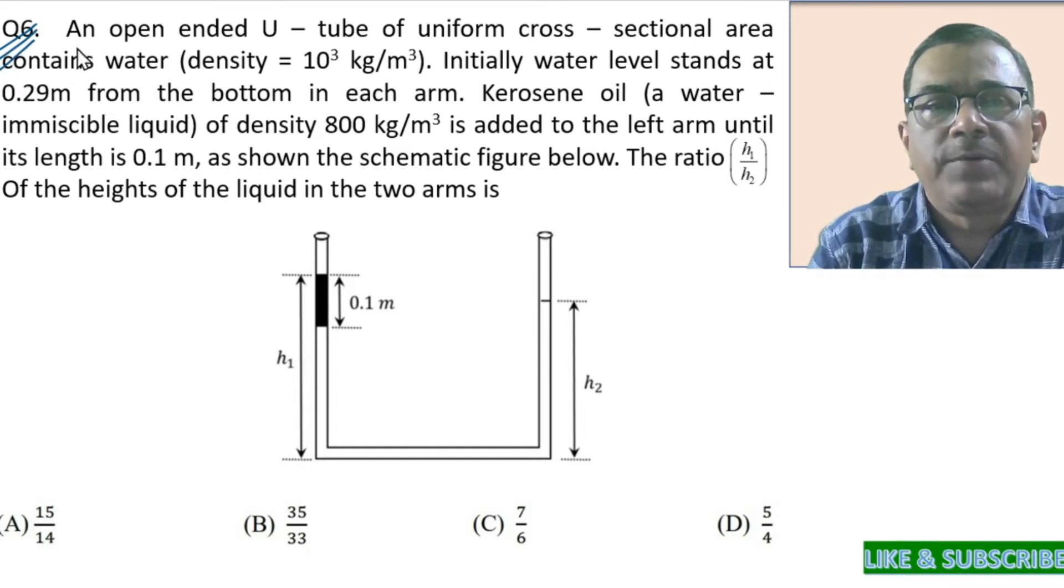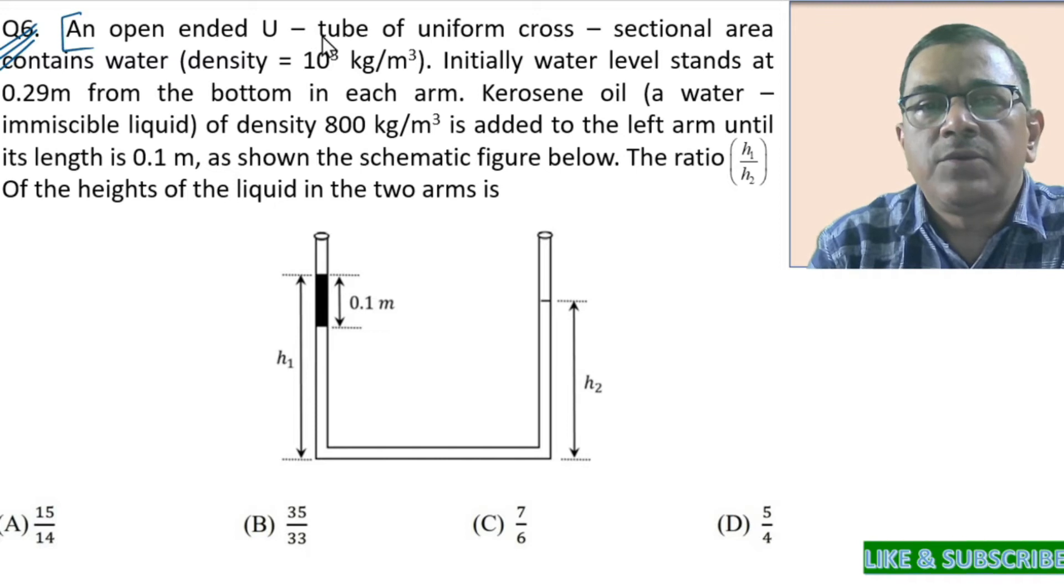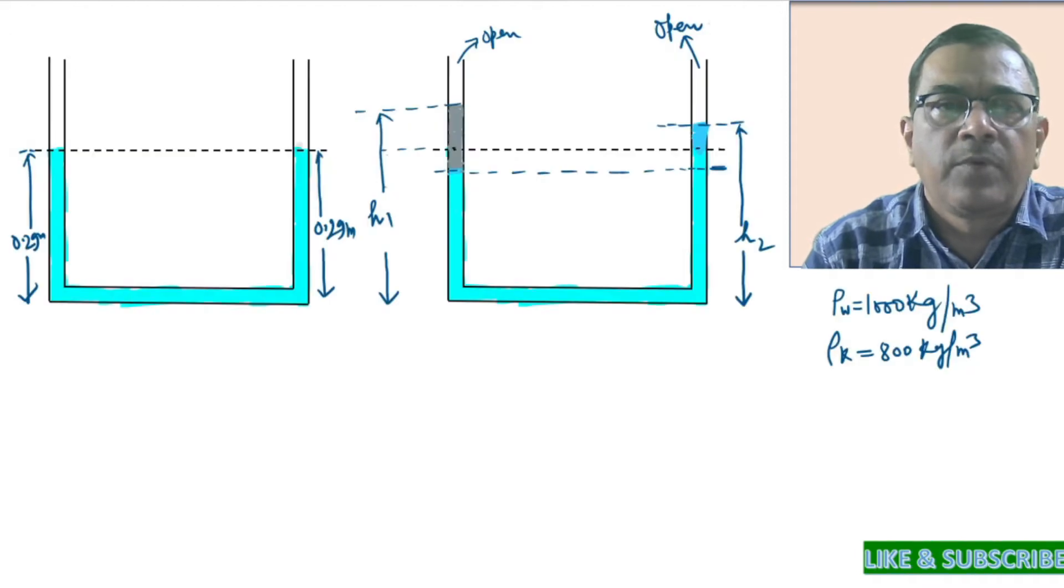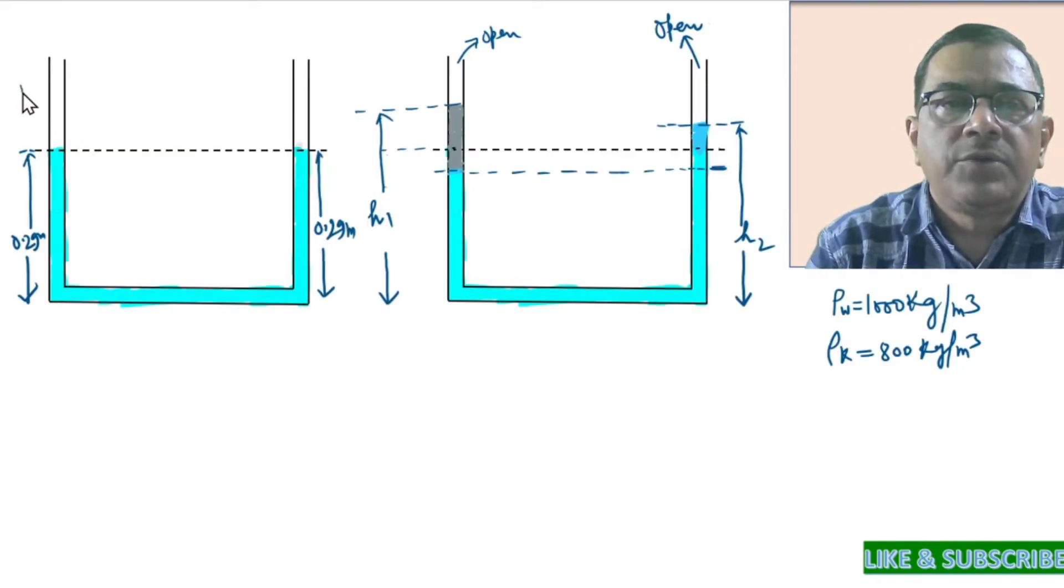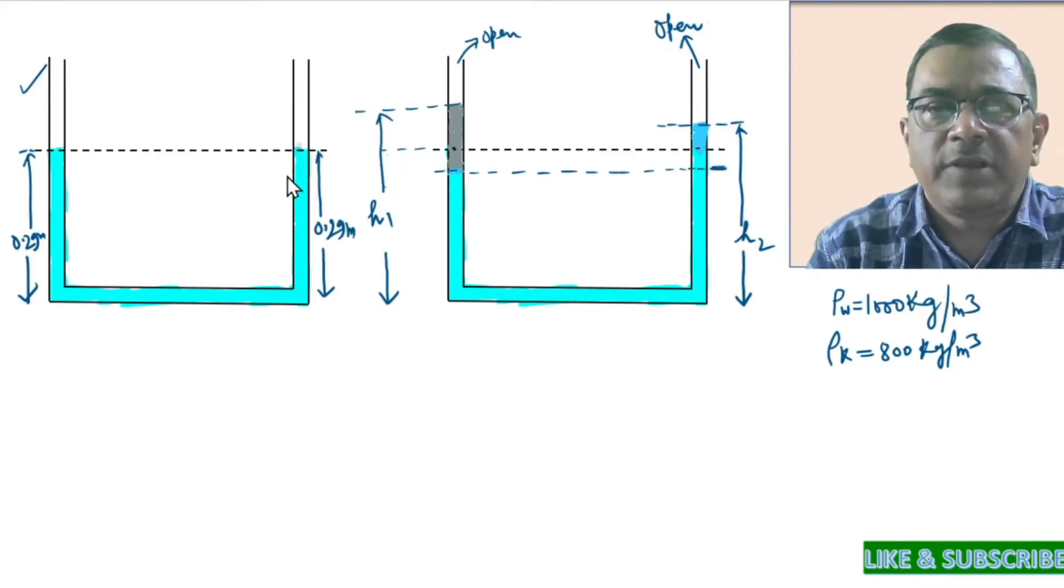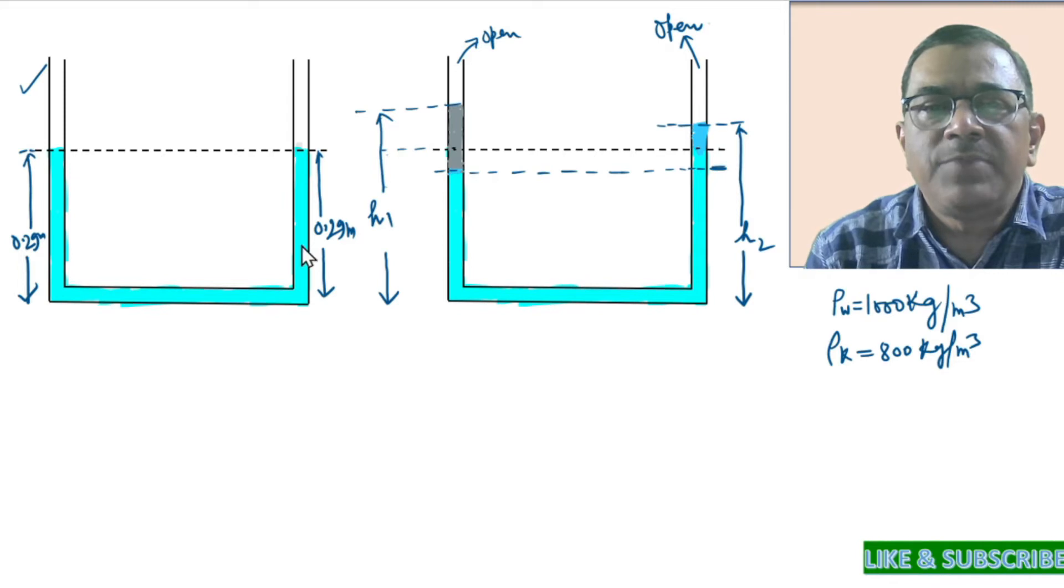According to the problem, there is an open-ended U-tube of uniform area of cross-section that contains water. So here is a U-tube of uniform area of cross-section that contains water. The level of water on either side is 0.29 meters.